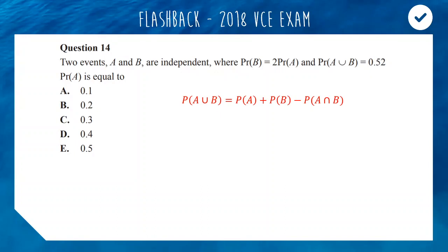The probability of A or B is probability of A plus probability of B. But then you take away the overlap of A and B because you've just counted it twice. Normally in Year 9 and 10 you look at mutually exclusive events where A and B can't happen at the same time, so probability of A or B is usually just A plus B. But in this case we can't assume that — we have to take away the overlap in our Venn diagram.